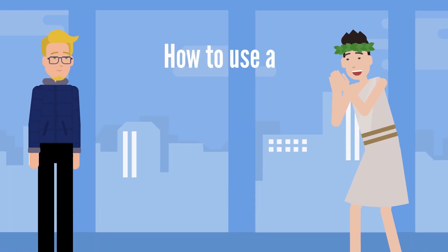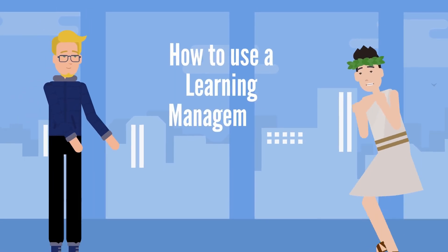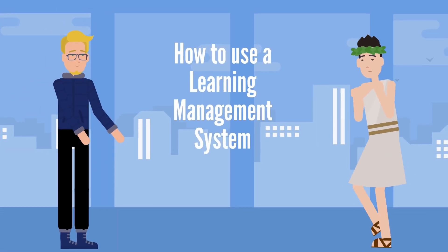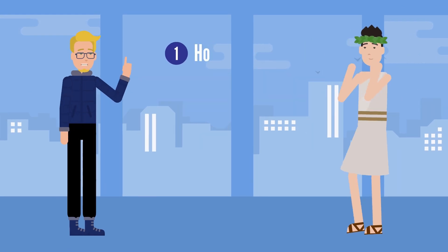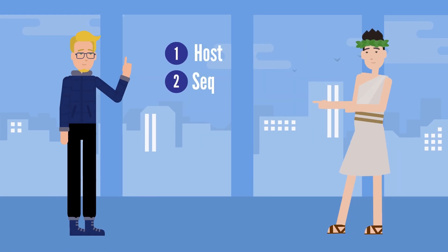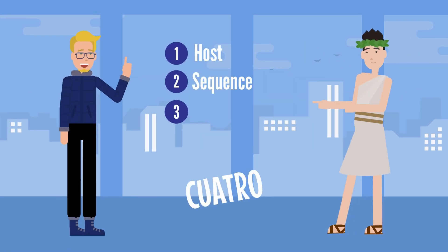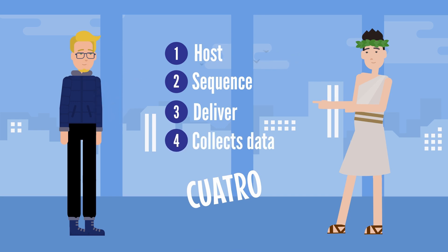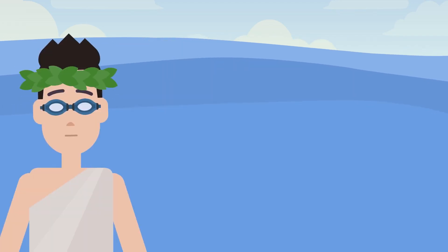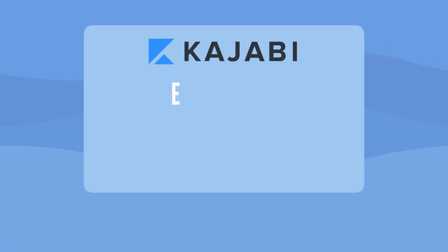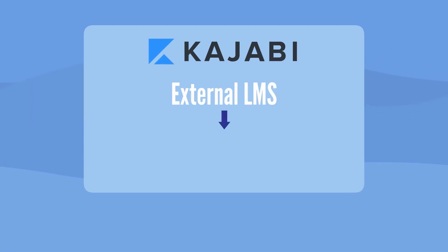You may be wondering how to use a learning management system. We are going to break it down into the four things that every LMS does. We're going to dive into two different LMSs, so make sure you're wearing your goggles. Number one is Kajabi, which is an externally facing learning management system for your customers.